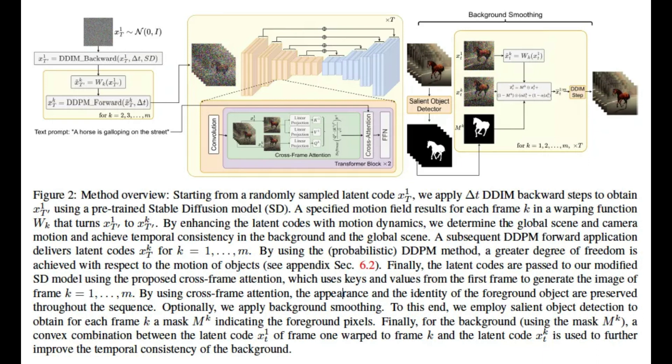First, they enriched the latent codes of generated frames with motion information, to keep the global scene and the background time consistent. Second, they used cross-frame attention of each frame on the first frame, to preserve the context, appearance, and identity of the foreground object.